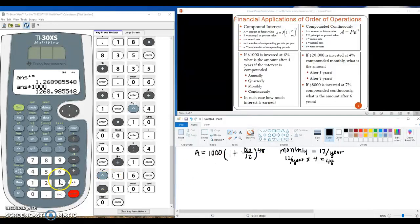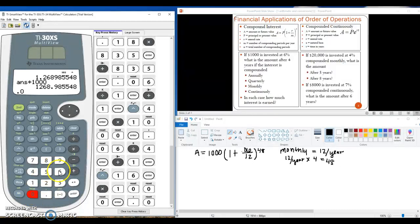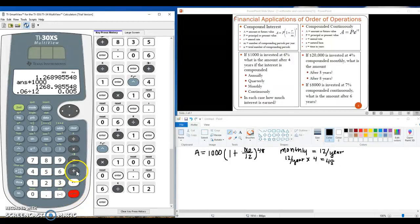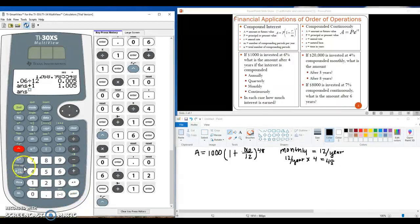And we go to our calculator and do the math one more time. So starting in parentheses with the division, 0.06 divided by 12. Add the 1. So that's the answer for inside our parentheses. Next we use the carat key with an exponent of 48.